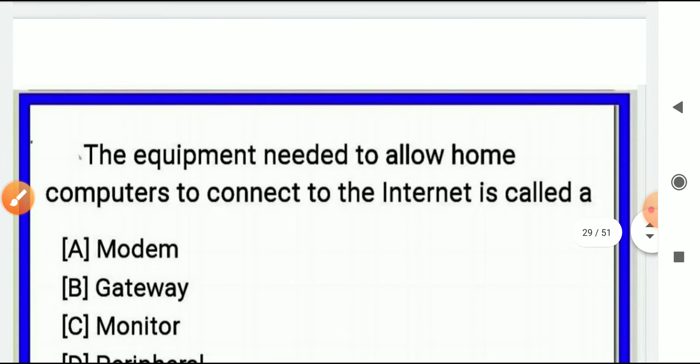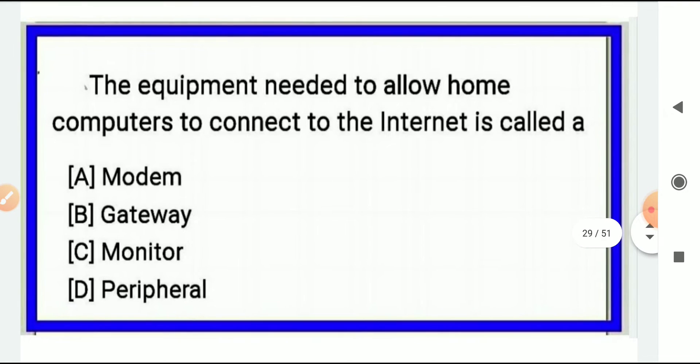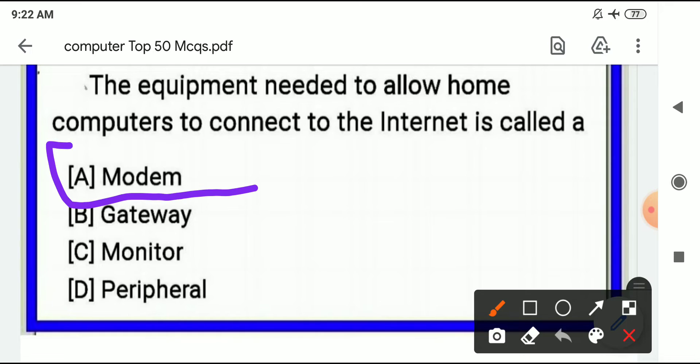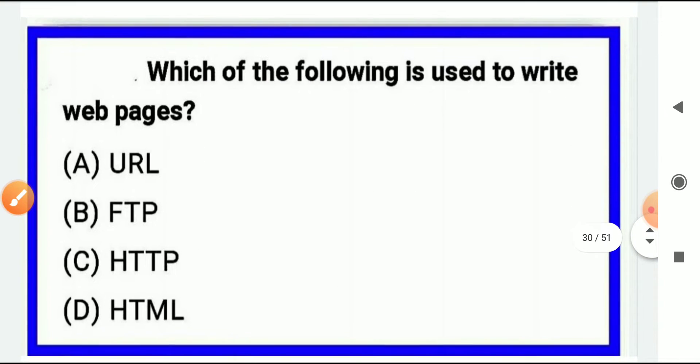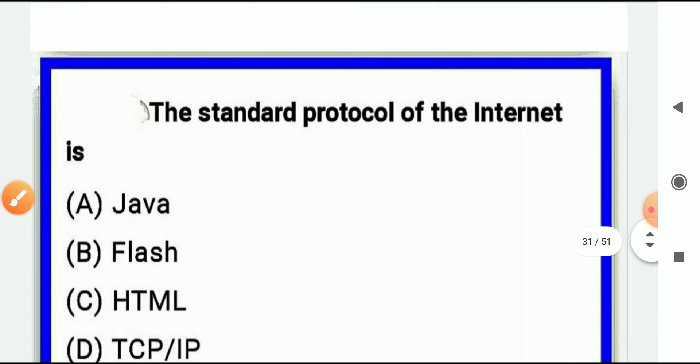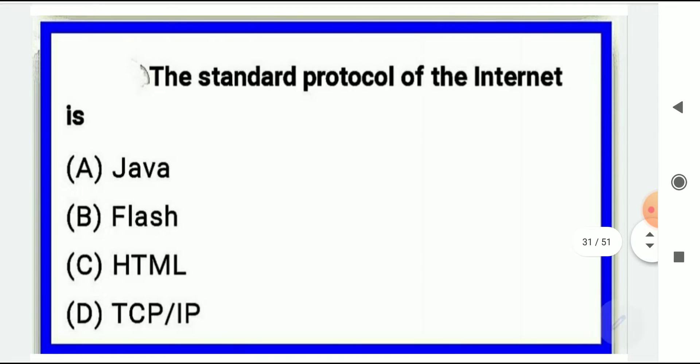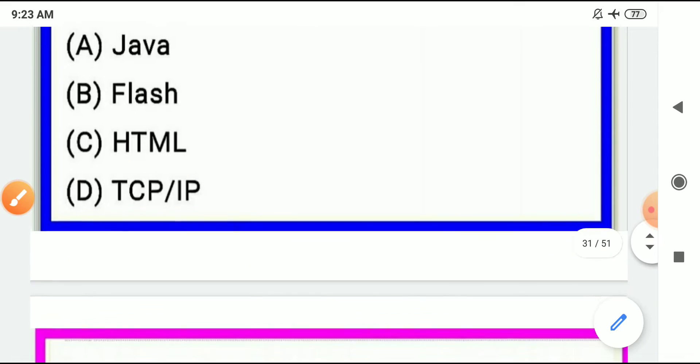The equipment needed to allow the computer to connect to the internet - the most important thing we need is modem, modulator demodulator. Next, which of the following is used to write the web pages? That is HTML, Hypertext Markup Language. The standard protocol of the internet - internet standard protocol is TCP/IP, Transmission Control Protocol Internet Protocol.